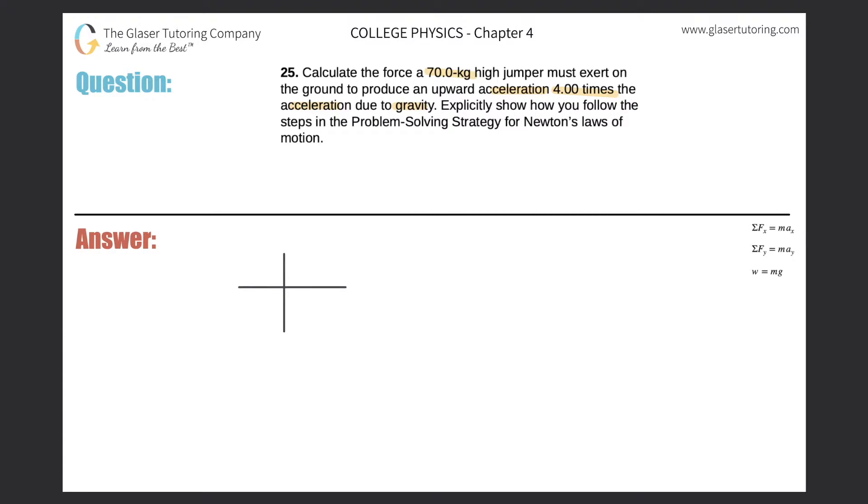So we have a jumper, correct? Let's just say this dot in the middle represents the jumper. Now, since we're talking about jumping off the ground, this is a problem in the y direction, and therefore you must always talk about the weight, the force due to gravity on the object itself when you're describing these problems.